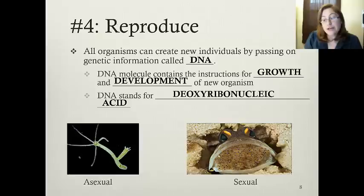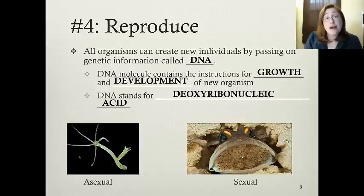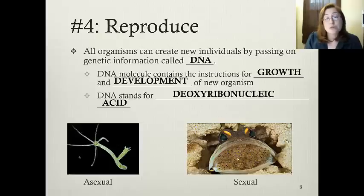When we look at the jawfish, it has mated with another jawfish to produce a clutch of baby eggs. What has happened is there is a combination of genetic information between the two adults, which produces more diversity and unique combinations of genetic information in each one of these eggs. So these eggs will not be identical to one another.